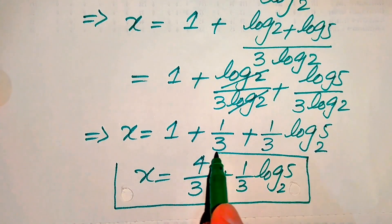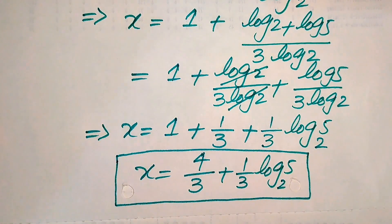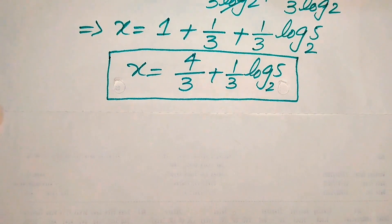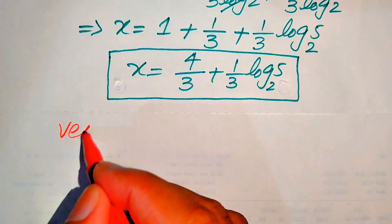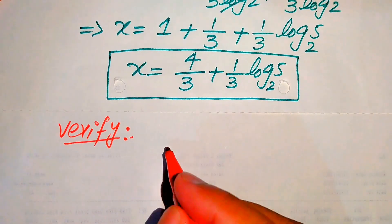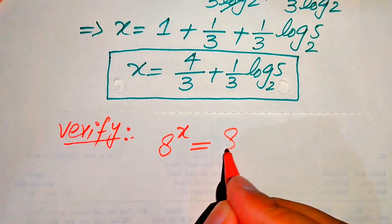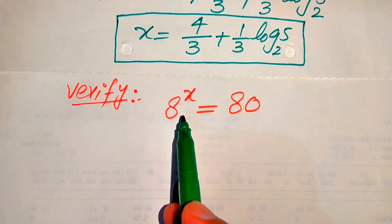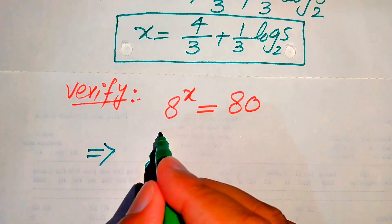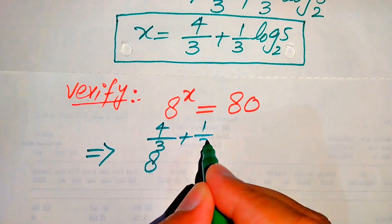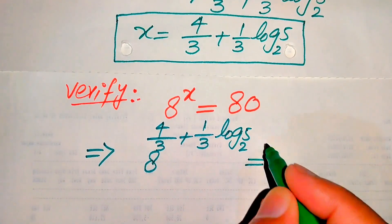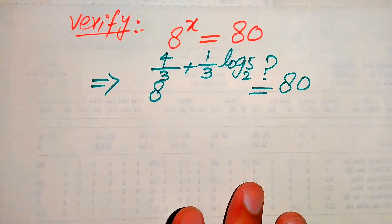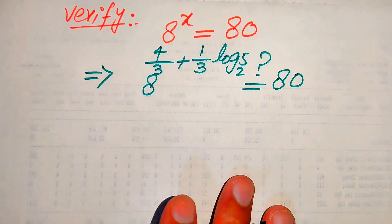So finally, this is our final value of x. In the next step we verify this value of x and check that it satisfies the given question statement. For verification, we copy down the given equation: 8 to the power of x equals 80. We substitute the above value of x into the left hand side, giving 8 to the power of 4 over 3 plus 1 over 3 times log base 2 of 5, and check whether it equals 80.